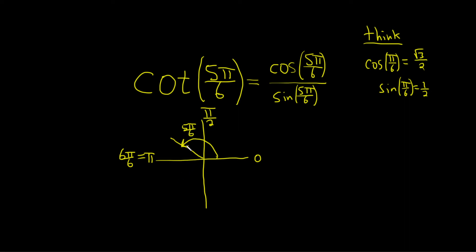On the unit circle, cosine is the x coordinate, and the x coordinate here is negative because we're in quadrant 2. So the cosine of 5π over 6 will be negative square root of 3 over 2. Sine is positive because it's the y coordinate. So the sine of 5π over 6 will be positive 1 half.